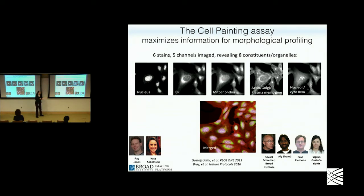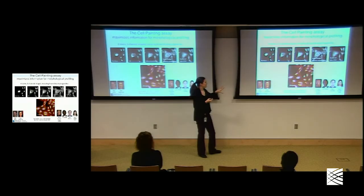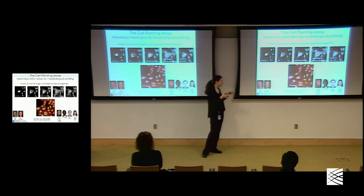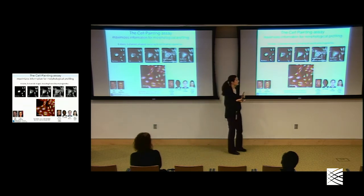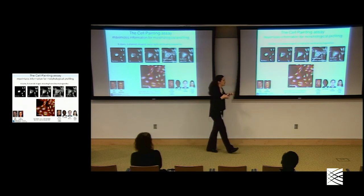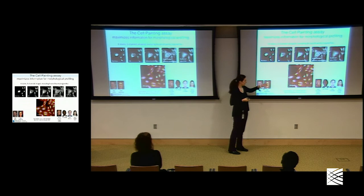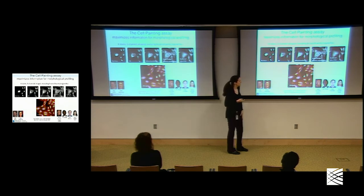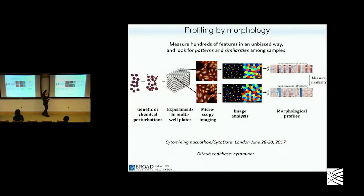If we don't know what phenotypes we're looking for, how do we stain the cells? With a genome expression assay you measure the entire genome. How do you measure the entire morphology of a cell? It's not possible in a single assay, but you can choose judiciously a set of stains that pack in as much information as possible into a single very inexpensive assay. That's what we did with the cell painting assay — six stains chosen because they really get as much information as possible. It's inexpensive and very high throughput.